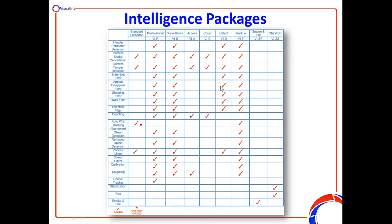There are subsets of all these features in various different packages, depending on whether you're looking for access control, counting purposes, or different subsets of features. The surveillance package is the most common one, giving you a lot of functionality as part of that software license. The auto-tracking only applies to the PTZ cameras.